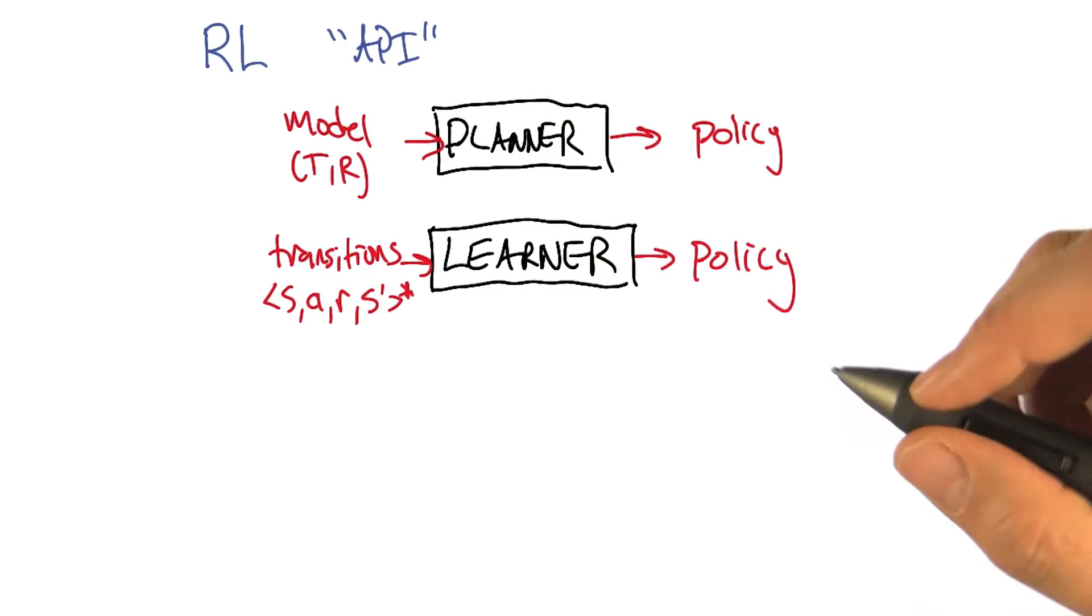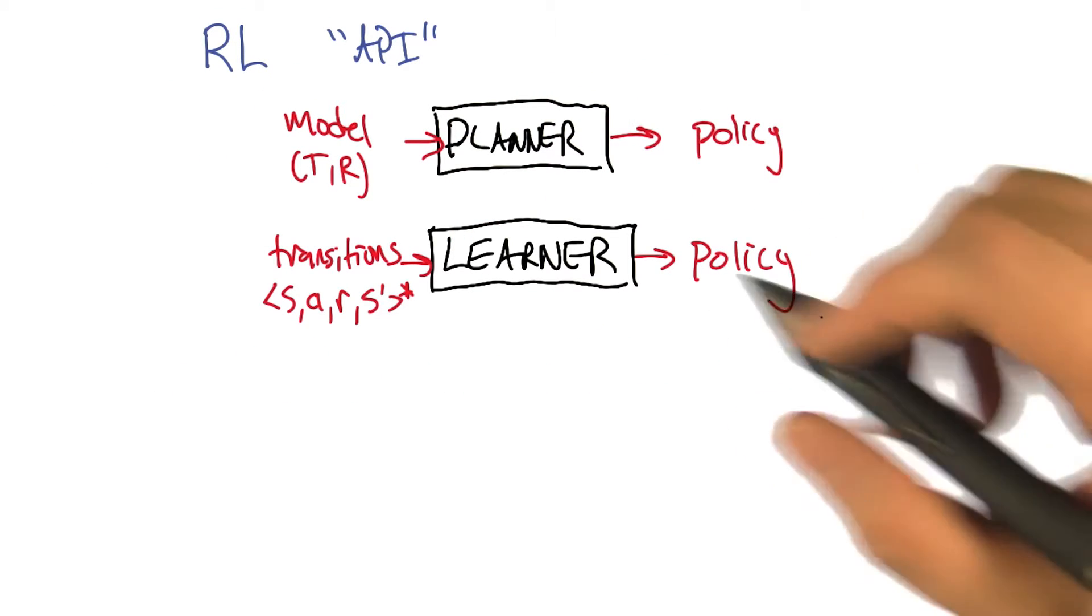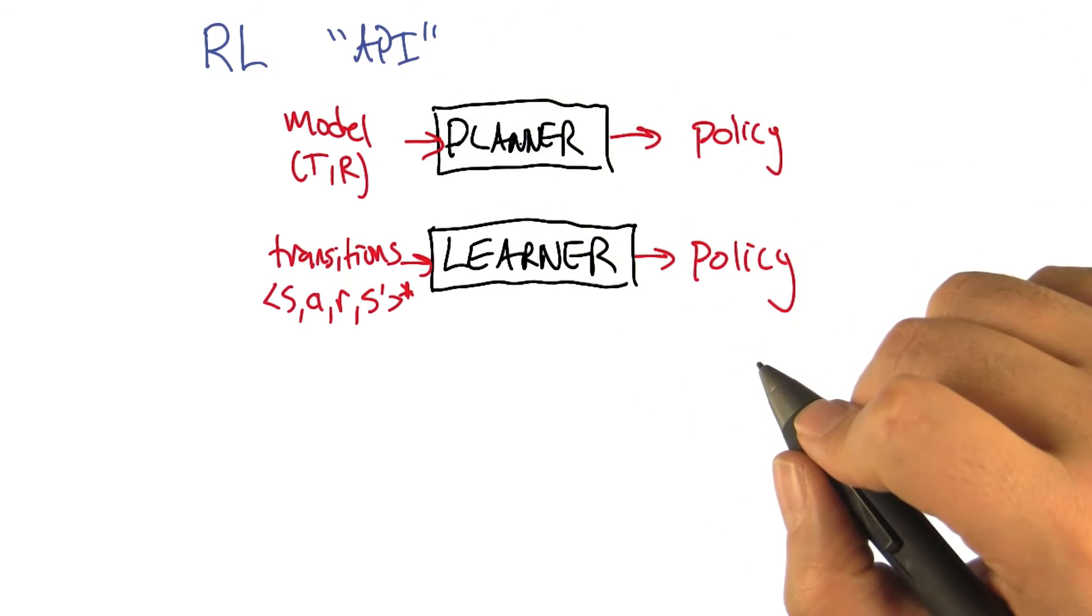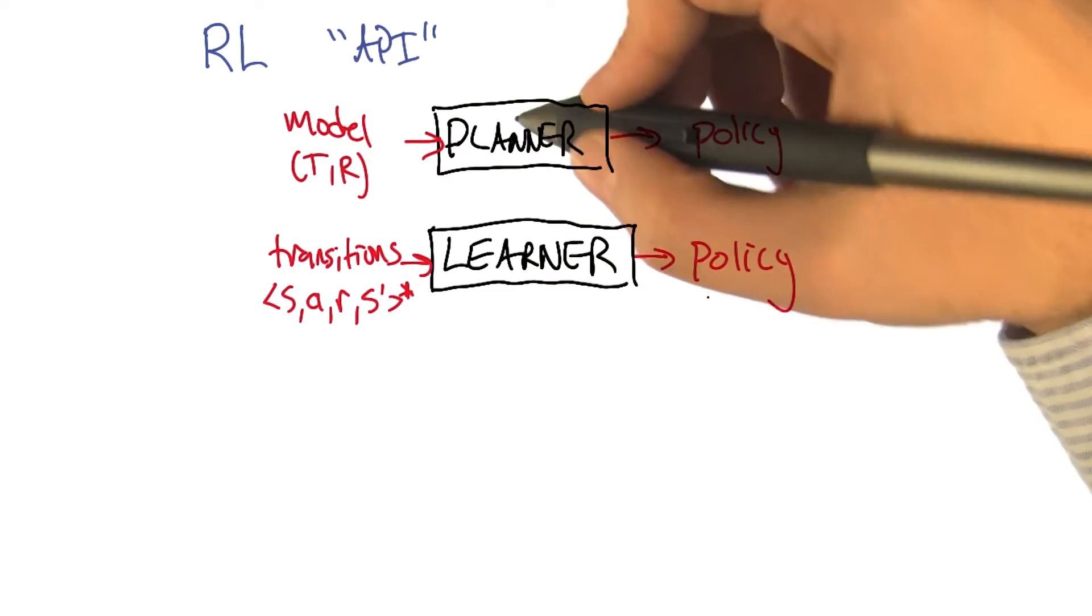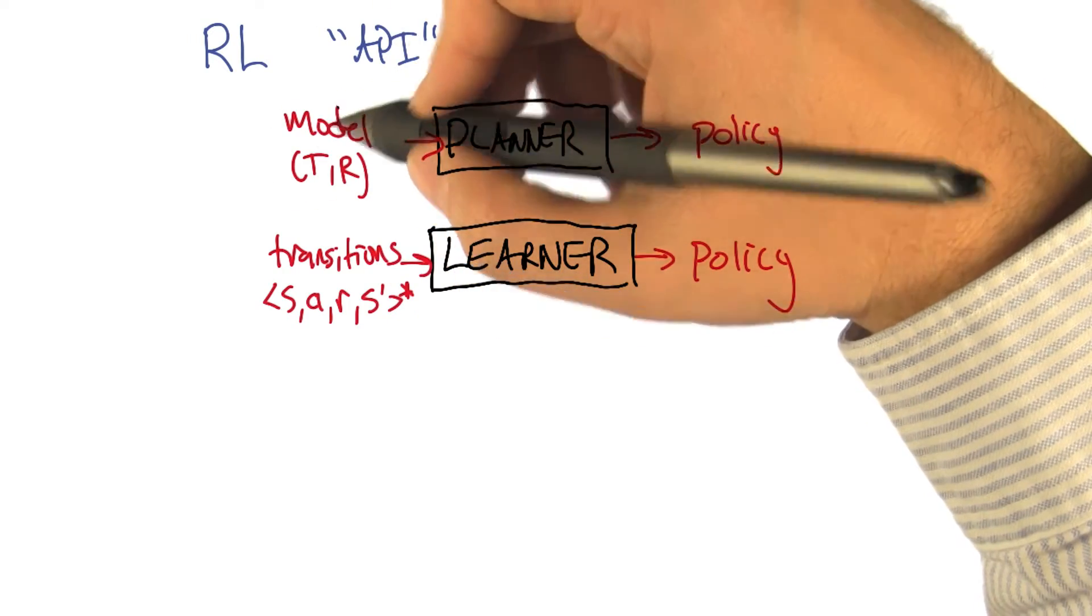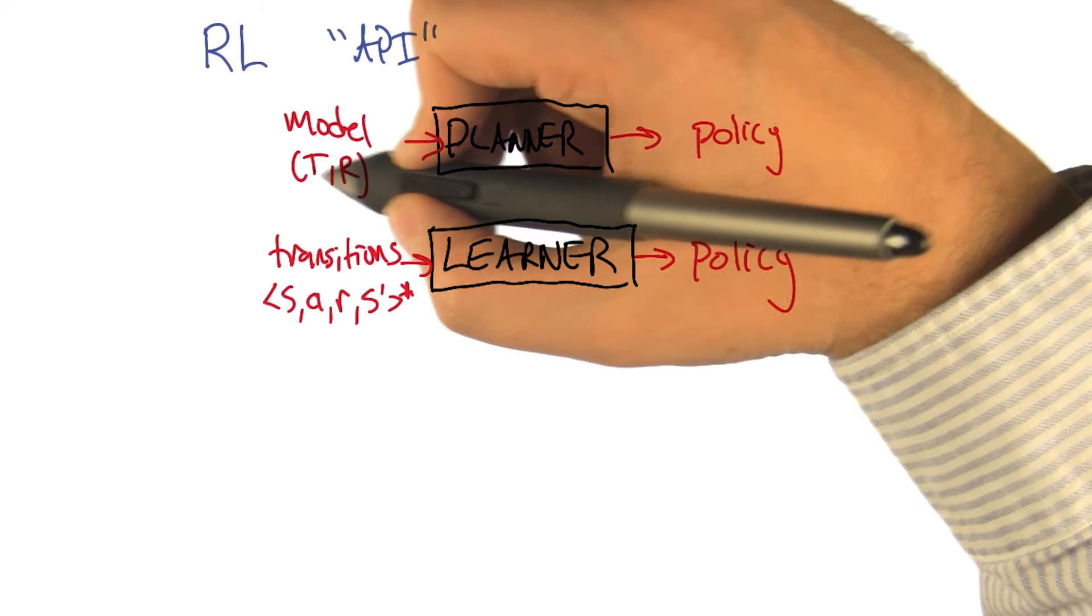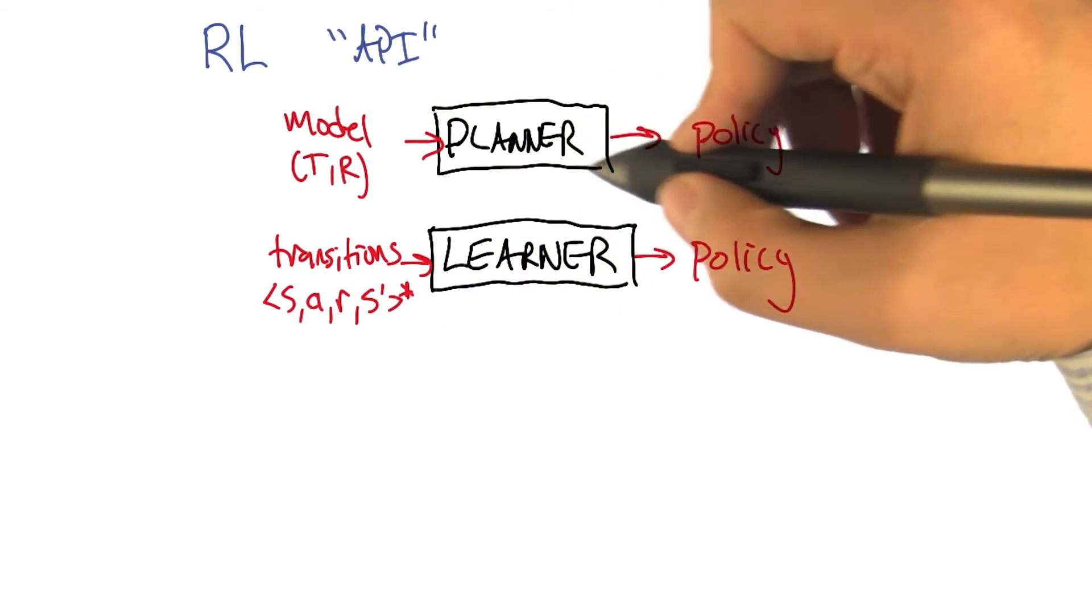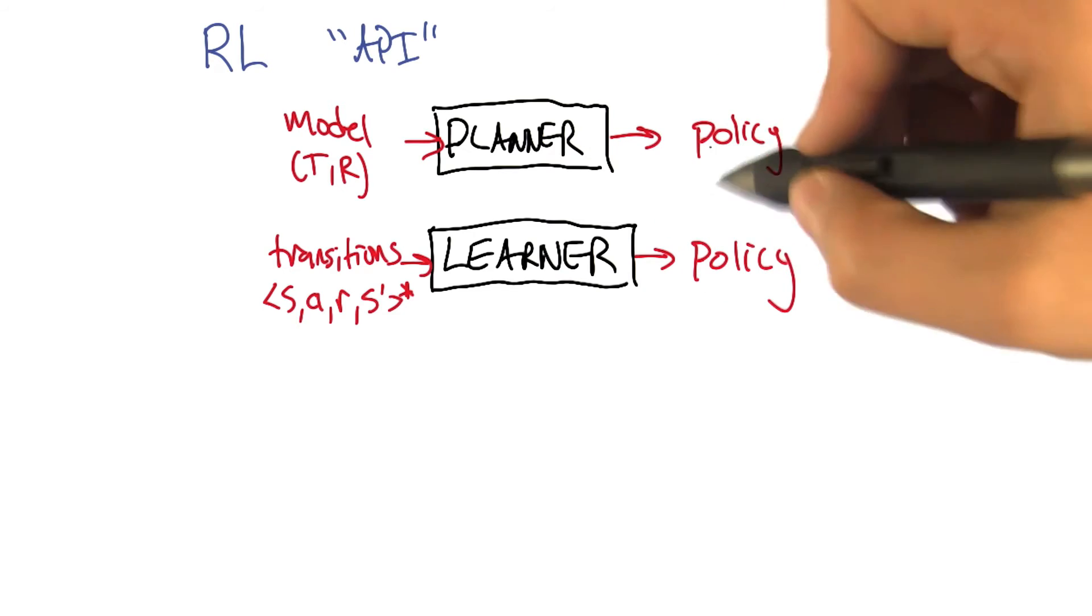Excellent. I find it useful to start off by thinking about a reinforcement learning API, like application programmer interface. So, what you talked about is this box here. The idea of being able to take a model of an MDP, which consists of a transition function T and a reward function R. And it goes through some code and a policy comes out.